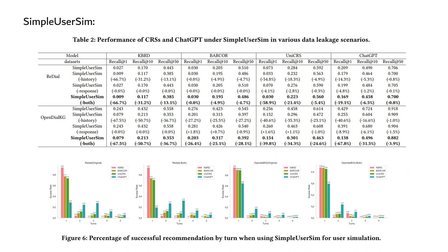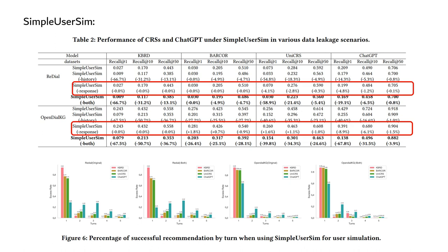To mitigate the aforementioned issues, we introduce a simple user simulator strategy that focuses on two key aspects. Firstly, it ensures that the simulator does not know the titles of target items until a successful recommendation is made. Secondly, based on the system's intent, our simulator can perform one of three actions: chit-chat, ask, or recommend. We use different prompts to control various actions of the user simulator.